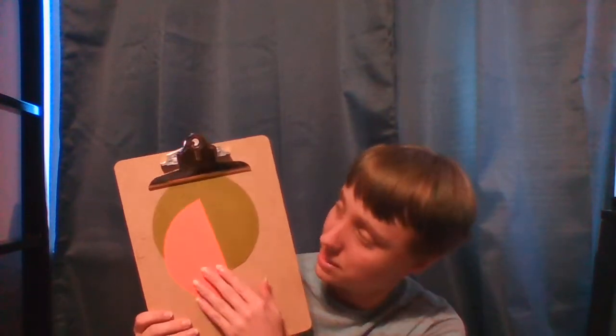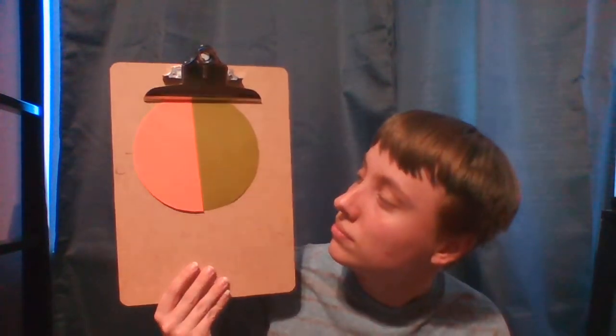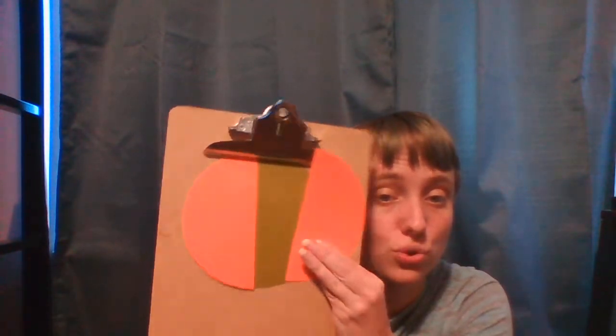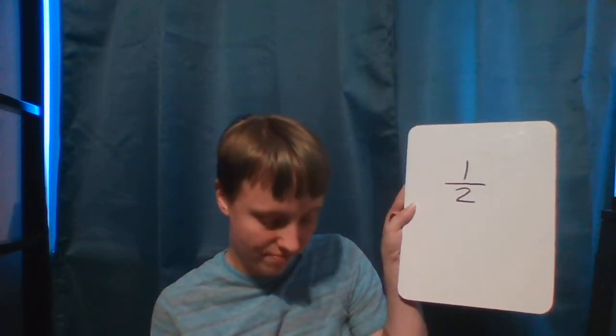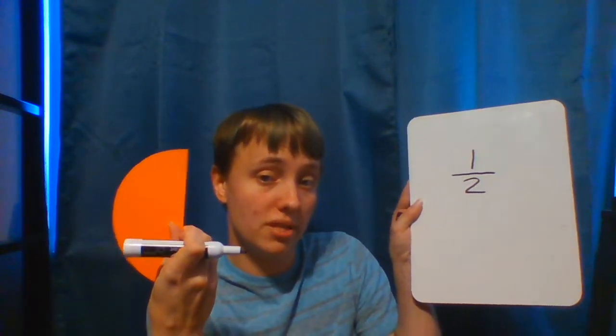If I put one of the orange pieces on, it covers up exactly half of my circle. And then I can stick the other one down and it covers exactly the other half. So these two parts together make a whole. What you guys are going to write on the back is one over two — one half — because this is one of two parts that make up a whole.